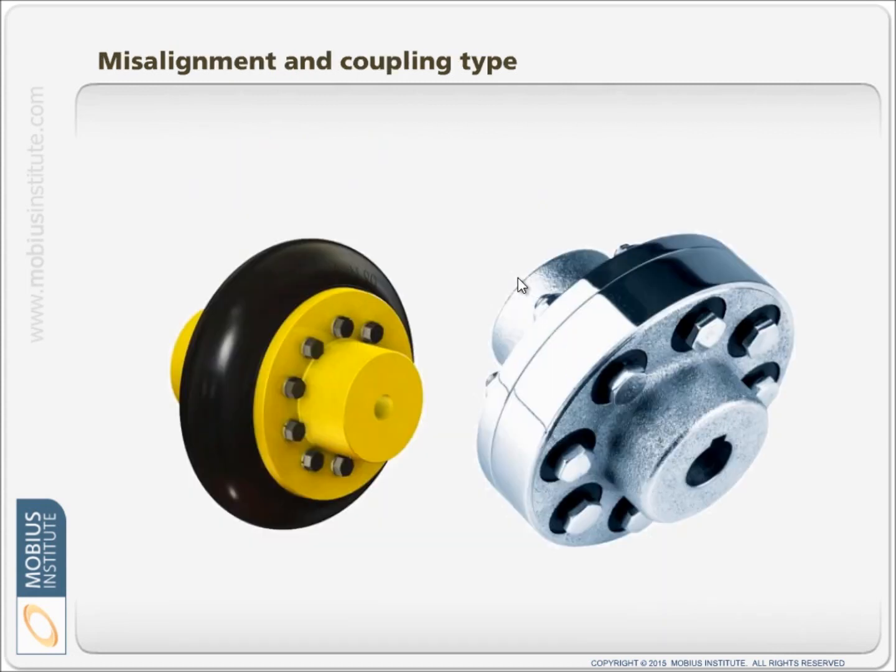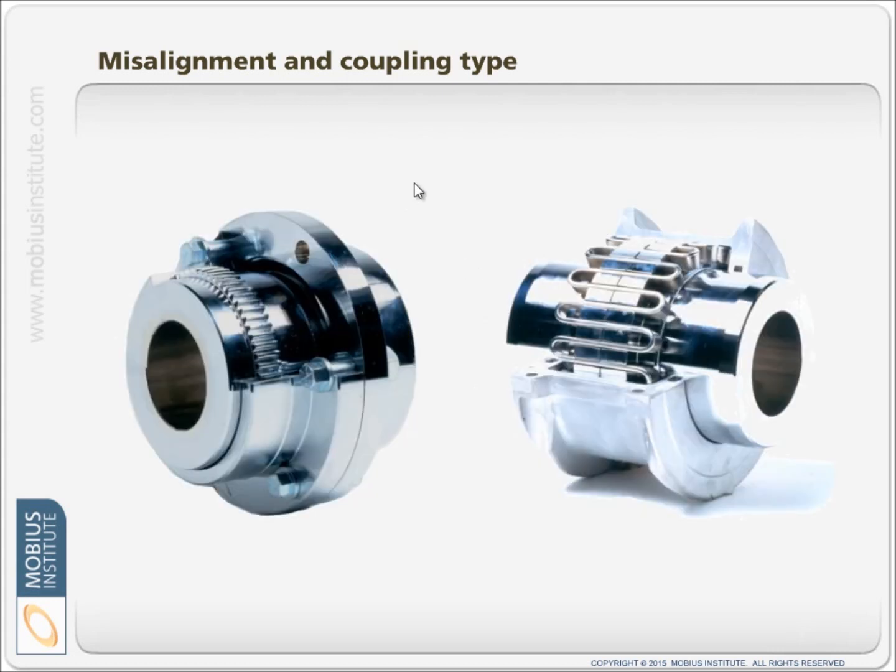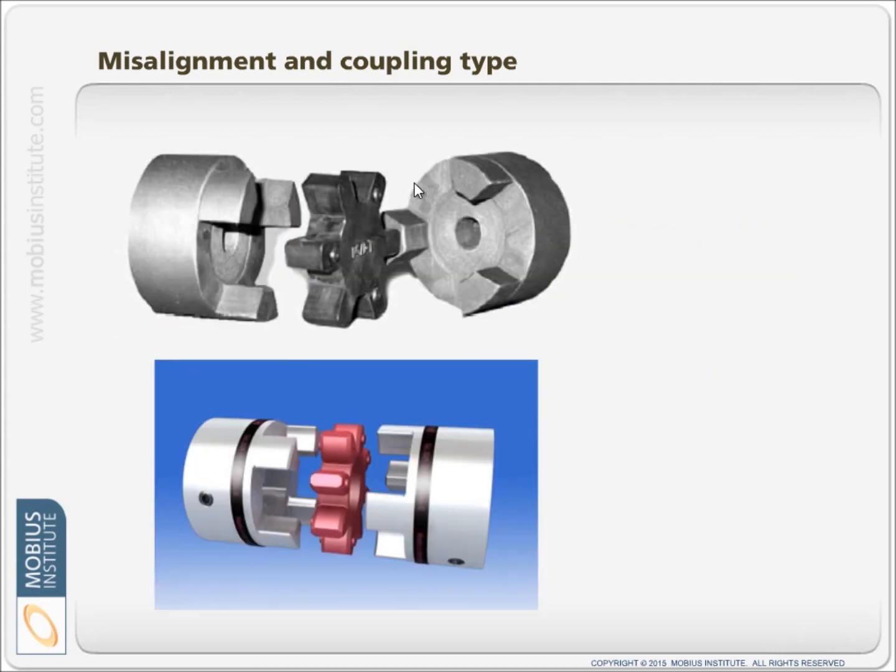It's very important to understand that the coupling type greatly affects the vibration that you will see. Whether it's a tire coupling, grid coupling, gear coupling, whichever type it is, a jaw coupling, they will generate vibration themselves potentially. And when there's any small amount of misalignment, that will exacerbate the vibration at certain frequencies. For example, a 3-jaw coupling might create vibration at 3X, but that doesn't mean that's all you will see in the case of misalignment.